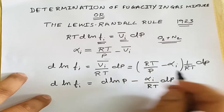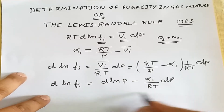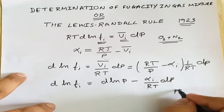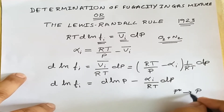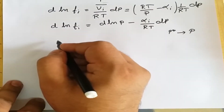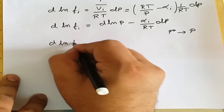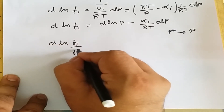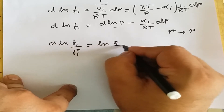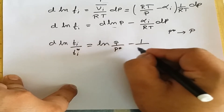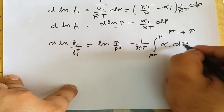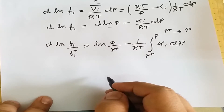Now we integrate this equation between the limits of very low pressure p* to any appreciable pressure p. Upon integration we have: ln(f_i/f_i*) = ln(p/p*) − (1/RT) ∫[p* to p] α_i dp.